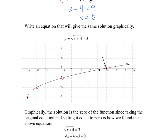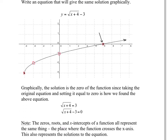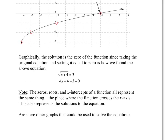So why is that point our solution? I moved the 3 over to the other side and set the equation equal to y, so the solution is when y equals 0. Graphically, the solution is the zero of the function. Note that the zeros, the roots, and the x-intercepts of a function all represent the same thing — it's where the function crosses the x-axis, and it's how we represent the solution to the equation.